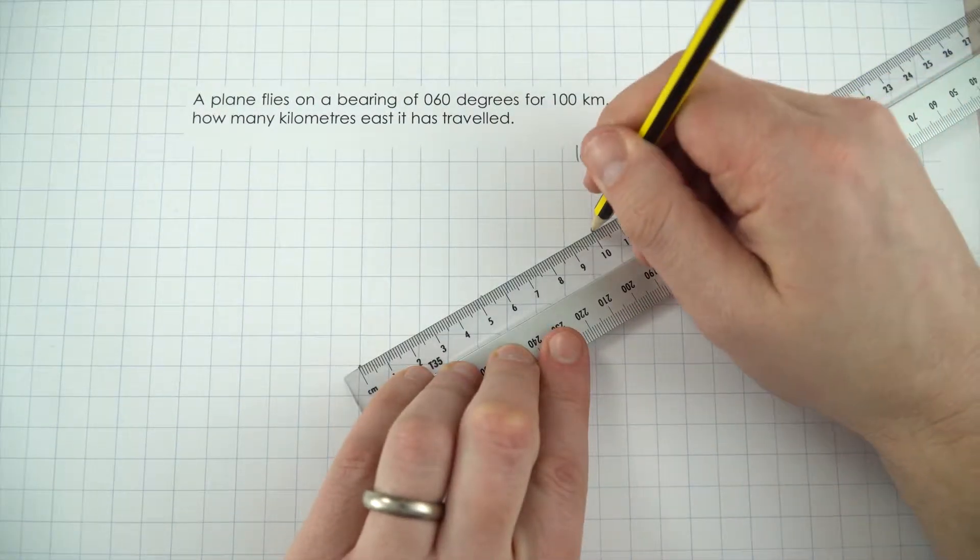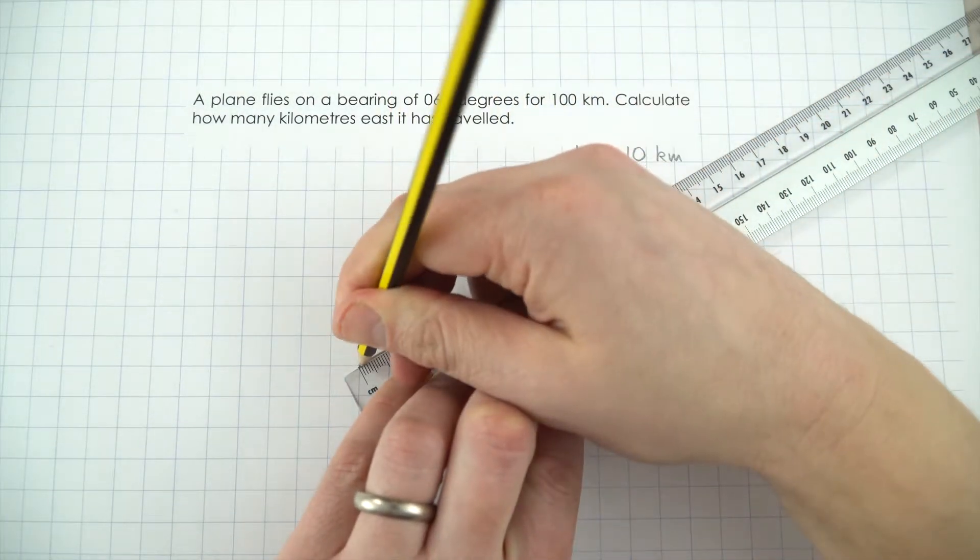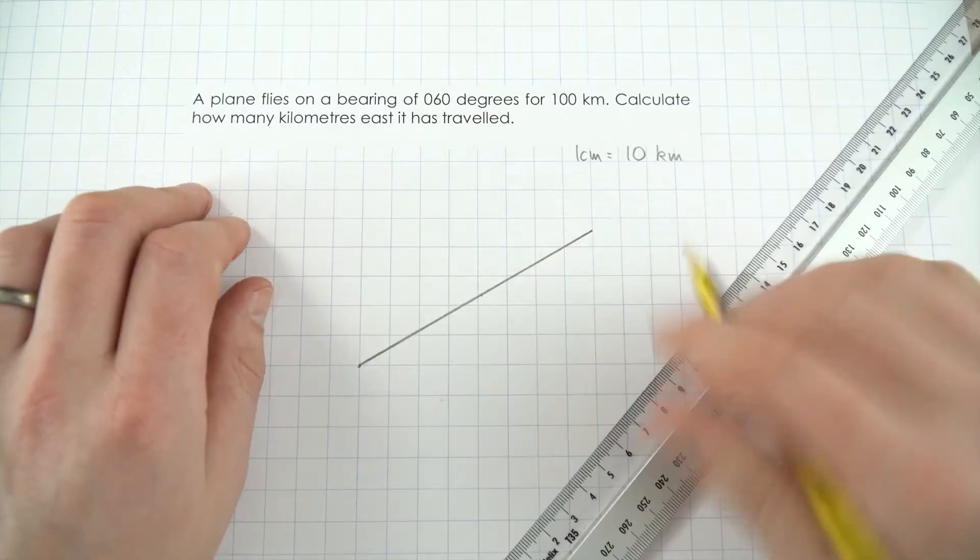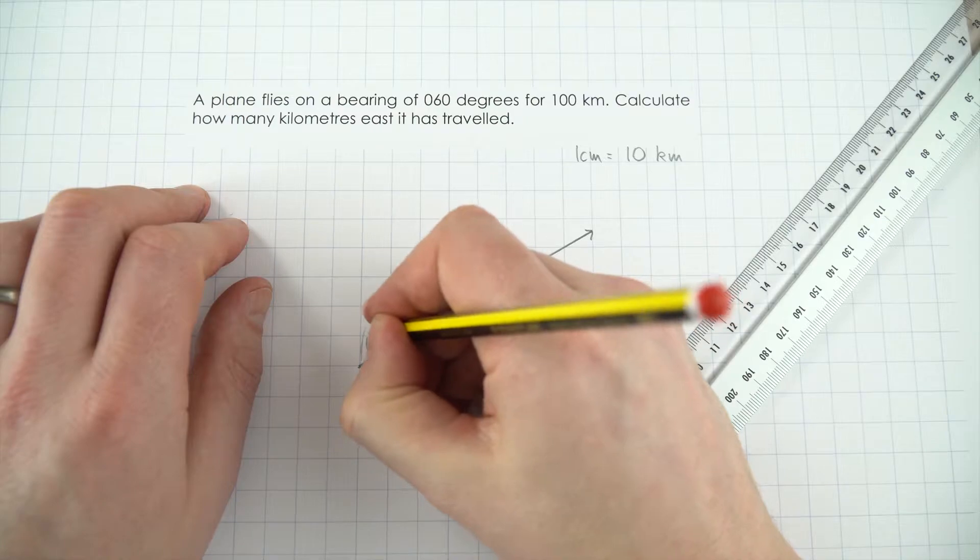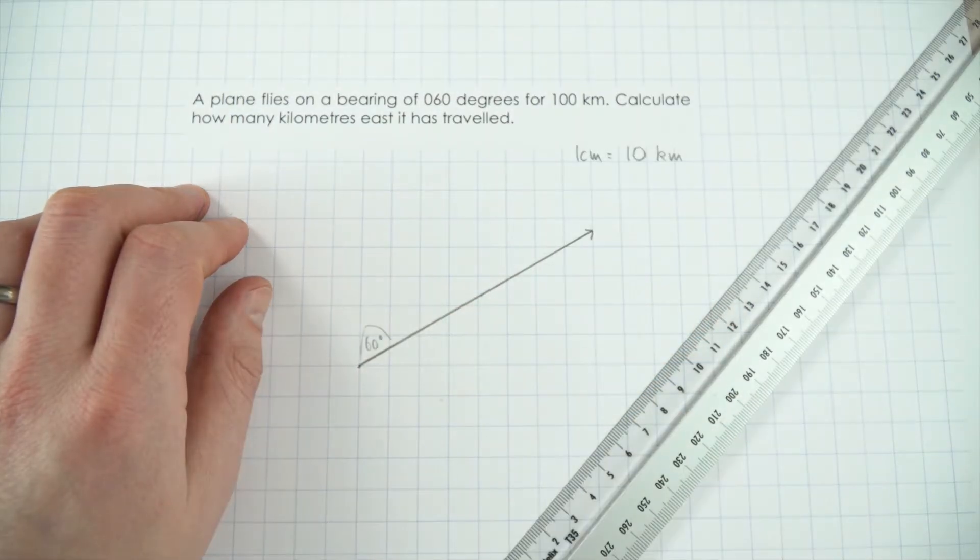And then I'm going to do a line which is 10cm long. So this is the way that the plane has gone, so 100km at an angle of 60 degrees from the vertical.